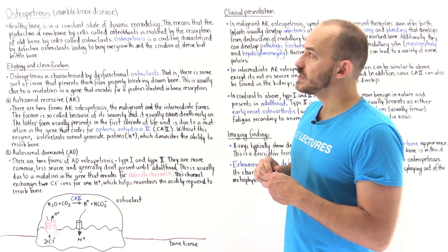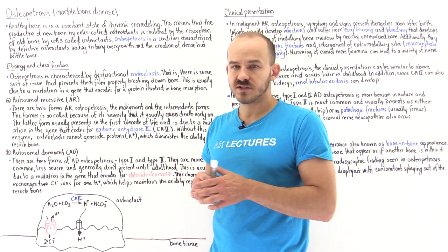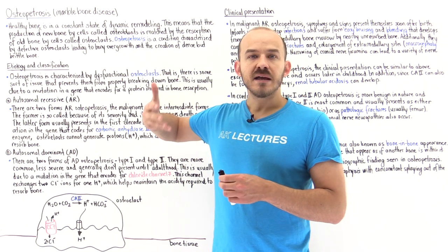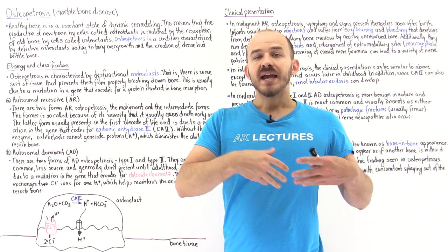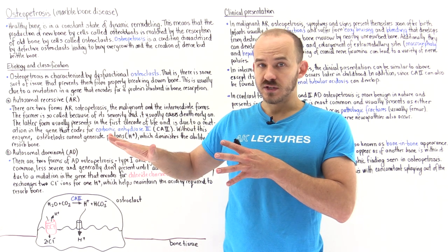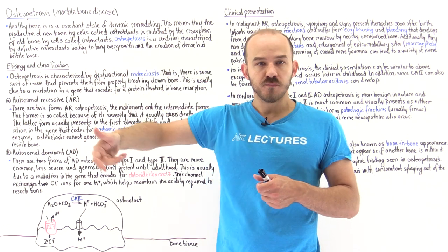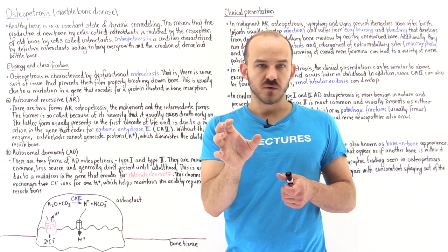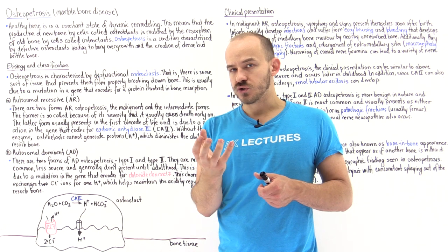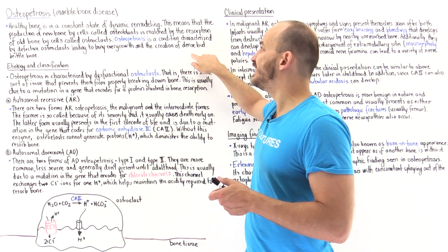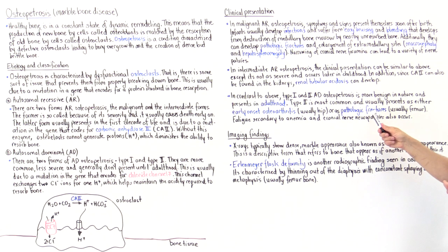In osteopetrosis, we have a problem in the osteoclasts — we have dysfunctional osteoclasts. Because they're not able to function properly, we're not going to be able to break down or resorb old bone. The osteoblasts still function properly, so they still build new bone on top of old bone, causing very dense-appearing bone. But even though it's very dense, it's not going to be very strong because the integrity of the structure is compromised. So even though we have dense bone, it's going to be very brittle and easy to break, and that's why we see pathologic fractures.